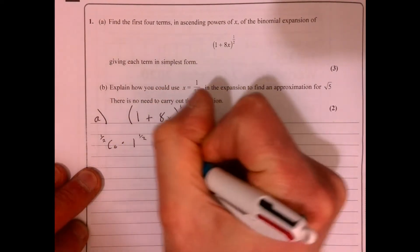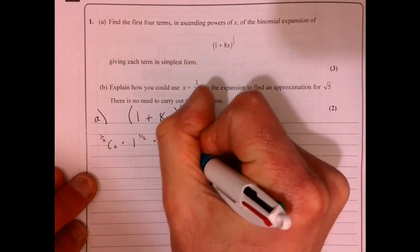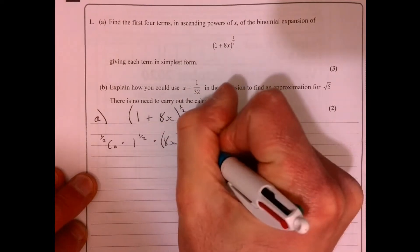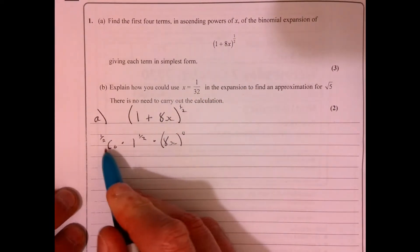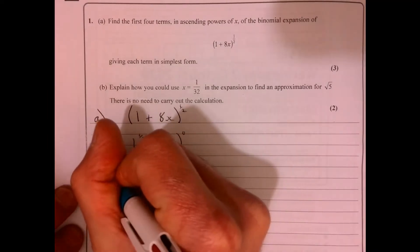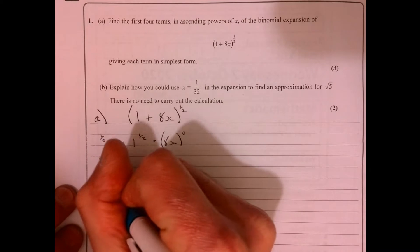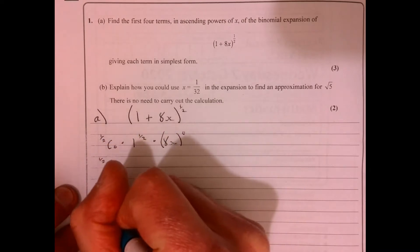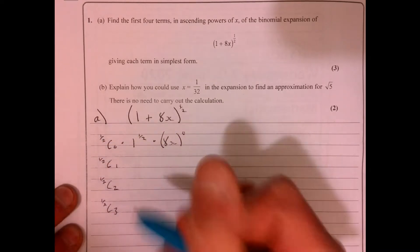So one to a half. Now, you can't actually do half C0. That won't work on your calculator, but we'll worry about that in a second. So half C1, half C2, half C3.